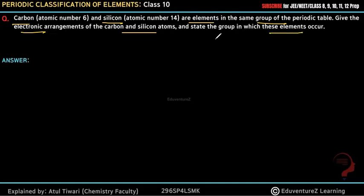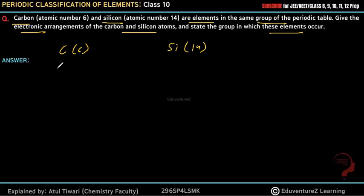Carbon has atomic number 6 and Silicon has atomic number 14. They belong to the same group in the periodic table. The electronic configuration of Carbon (atomic number 6) is 2, 4 — and subshell-wise: 1s² 2s² 2p².